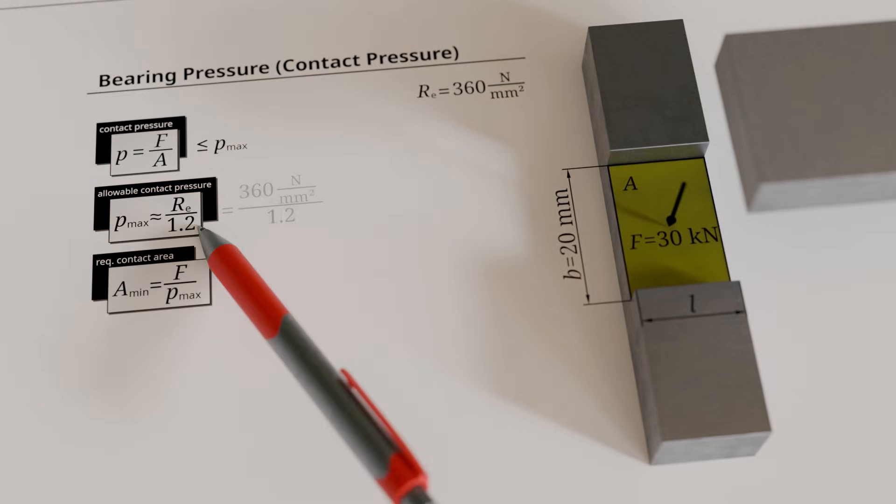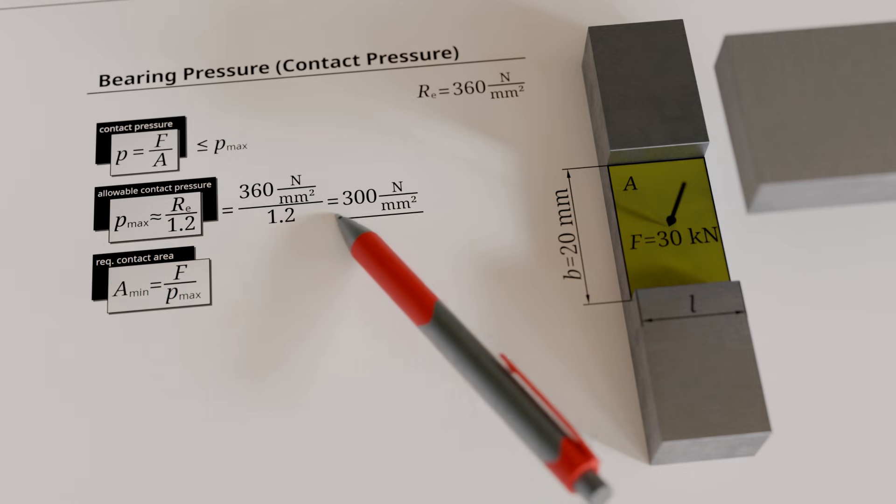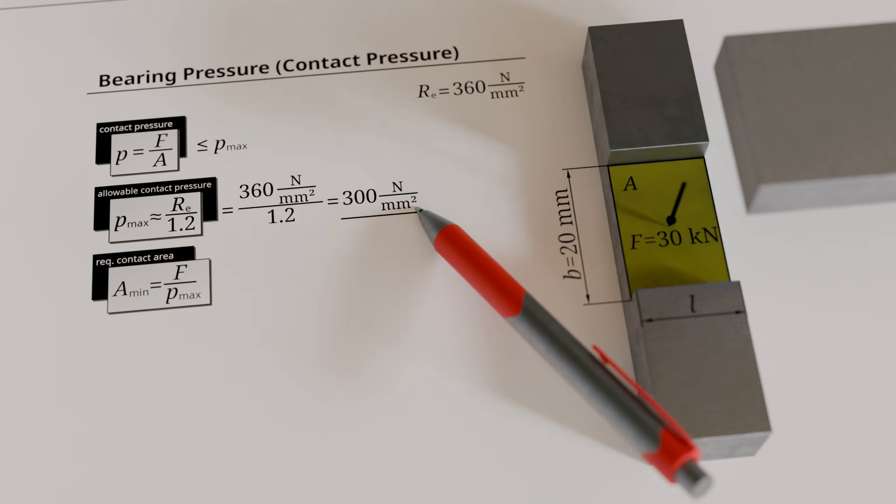Dividing this value by 1.2 gives an allowable bearing pressure of approximately 300 newtons per square millimeter, which must not be exceeded at the contact surface.